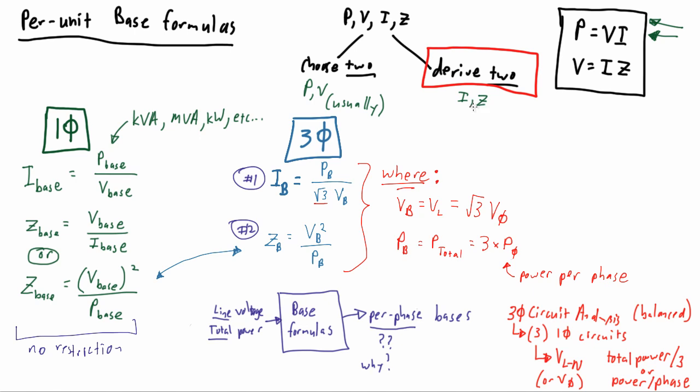Now let's look at how inputting line and total values yields per-phase values in the discussion of three-phase circuit analysis as it applies to our three-phase base formula. First, let's establish our per-phase power, which equals the total power over three, because we're dividing our total power by three into three individual single-phase circuits.